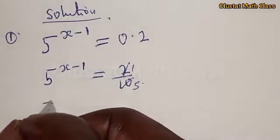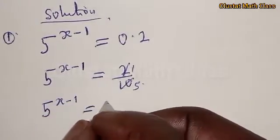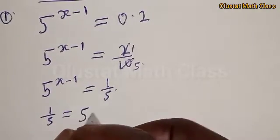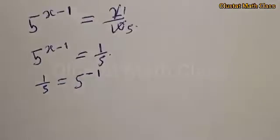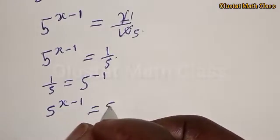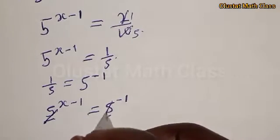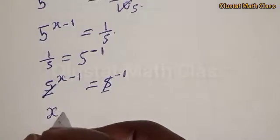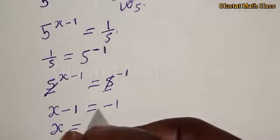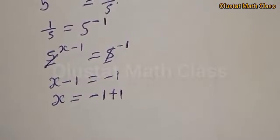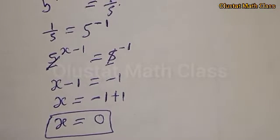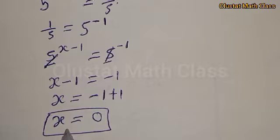We have 5 raised to power x minus 1 is equal to 1 over 5. But 1 over 5 is the same as 5 raised to power negative 1. Therefore, our equation becomes 5 raised to power x minus 1 is equal to 5 raised to power negative 1. Since they have the same base, we have x minus 1 is equal to negative 1. Adding 1 to both sides, x is equal to 0. That is our final answer.